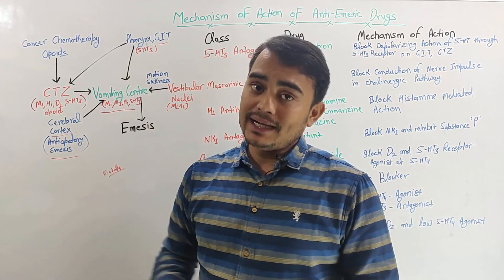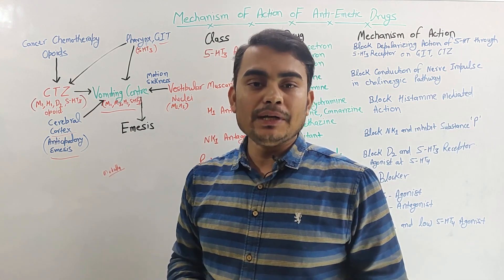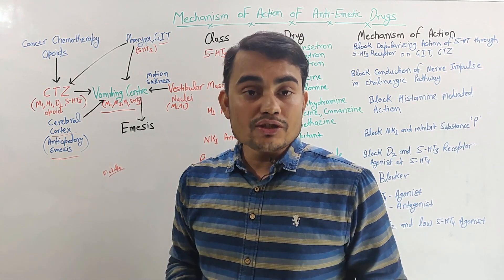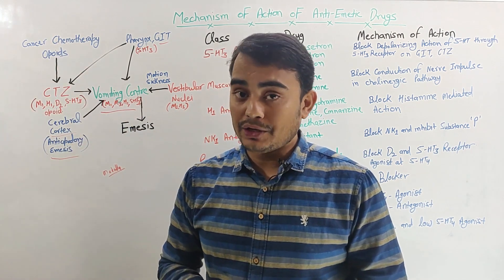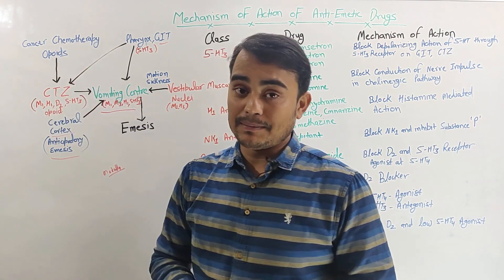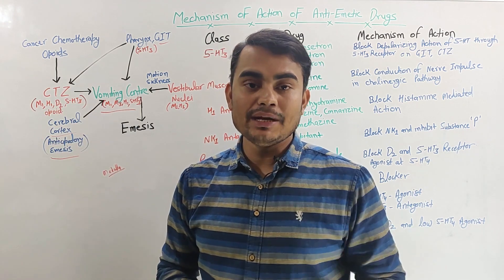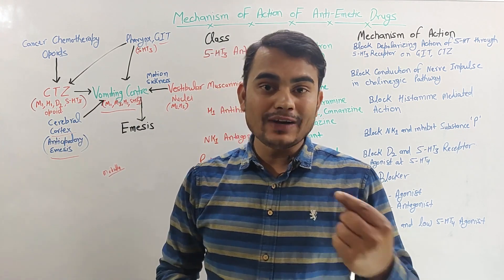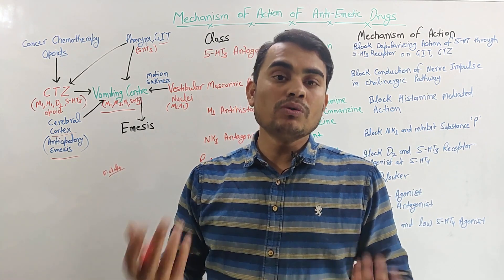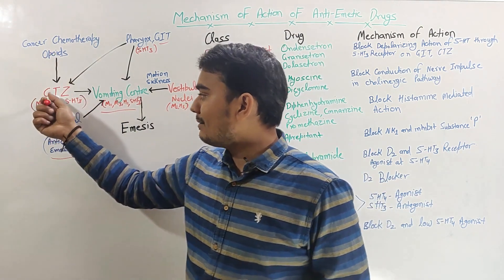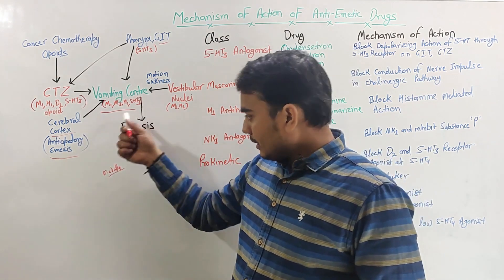Sometimes opioids and chemotherapy drugs can also cause emesis. Cancer chemotherapy drugs stimulate the CTZ receptor. In the CTZ receptor there are different receptors: muscarinic M1, histaminic H1, dopaminergic D2, 5-HT3, and also opioid receptors. When vomiting occurs due to opioids, those opioids stimulate the CTZ, and the CTZ further stimulates the vomiting center in the medulla, causing emesis.